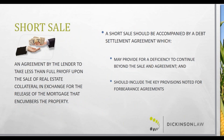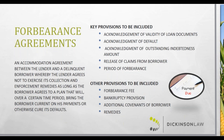Here are some key and recommended provisions for forbearance agreements. First, acknowledgement of the validity of the loan documents: insist that the borrower expressly acknowledge the validity of the loan documents — this serves to remove enforceability claims later on. Acknowledgement of default: should litigation commence, you don't want to argue over the existence of the default, so require the borrower to admit the specific nature of the default and acknowledge that all statutory or contractual notices have been provided or waived. Amount of the indebtedness: have the borrower confirm the amount owed at the time of the forbearance agreement.